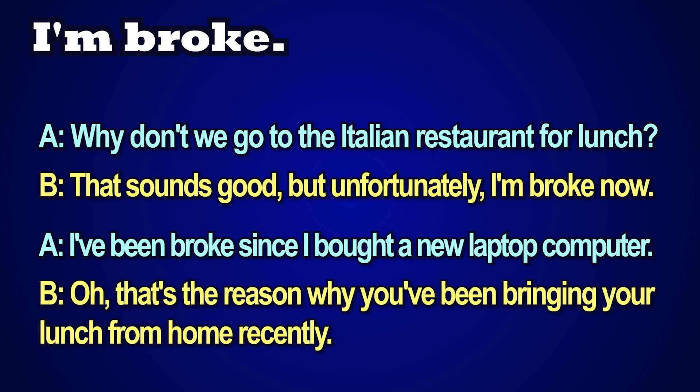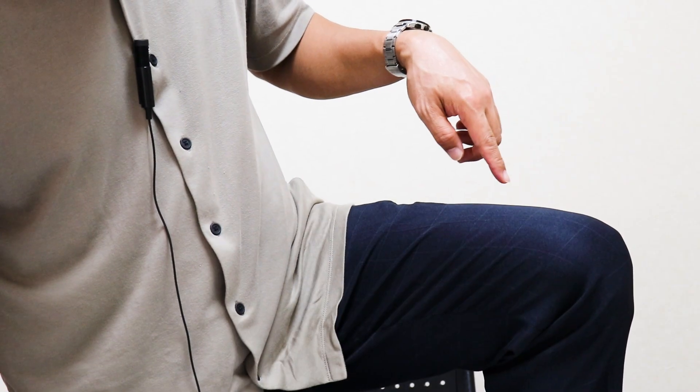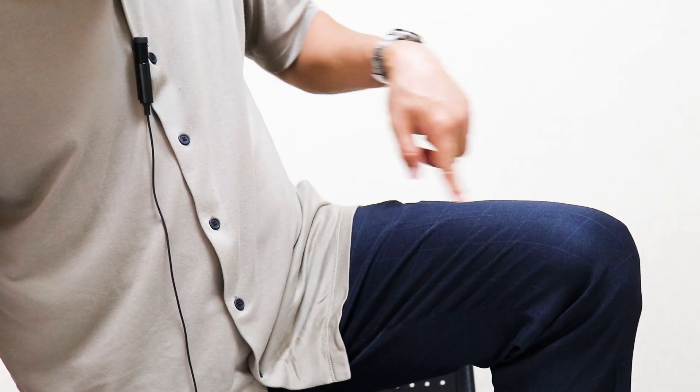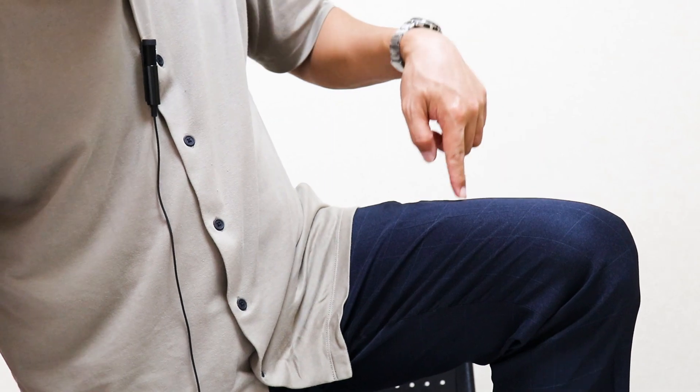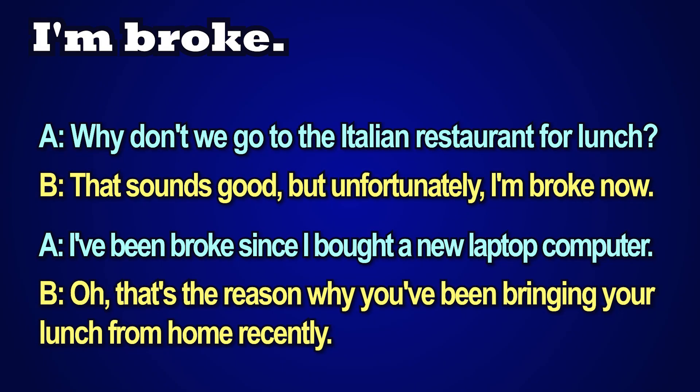In conversation 2, Person A bought a laptop computer. A laptop computer is a computer you can use on your lap — your lap is the top of your legs right here. On the other hand, a desktop computer is used on top of a desk.